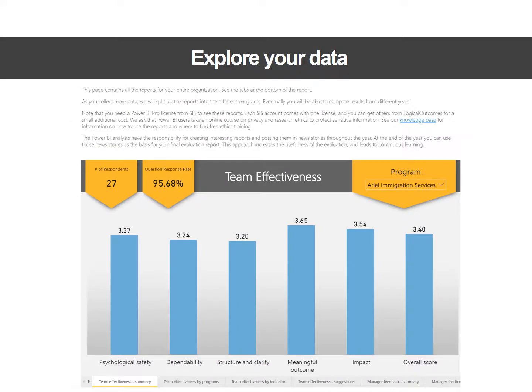Once you send out or distribute the surveys, you would be able to sign back into this site and see the data. Here is an example based on Power BI — you can see this is reporting on the team effectiveness instrument, which is for your staff and volunteers. It looks at the behaviors that are important for a well-functioning, productive team. Under the tabs you have a summary, a comparison of team effectiveness by program, by indicator, and so on. We are working with agencies to come up with designs for these Power BI reports. You can take screenshots, capture interesting insights, put them on your news stories, or download them.